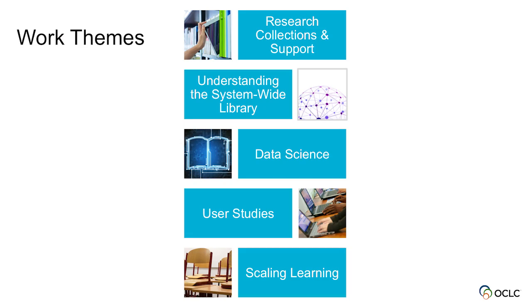We have five research themes. Research collections and support includes special collections and archives, as well as thinking about the scholarly process and data management. Understanding the system-wide libraries is an activity where we look at collections as a whole — treating all libraries as a single library and analyzing what we all hold together. Data science includes a lot of work on metadata, authority, and classification. User studies — if we can find a user, we try to put them under the microscope and see what they're thinking.